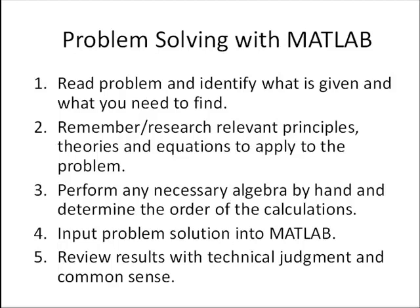Okay so let's review what we did to solve that problem. The first thing we did like any problem in math or science is we read the problem carefully and we identified what we were given and what we needed to find. Then since this isn't a specific class we had to really remember or maybe go out and research any relevant principles theories and equations to apply to that problem. So in this case we started with cosine law and sine law and we had the equation for the perimeter of a triangle and equation for the area. The next thing we had to do and it wasn't too hard in this case is we had to perform any necessary algebra by hand and determine the order in which we did the calculations. We had to make sure to do them in the right order. And then we started inputting the problem solution into MATLAB.